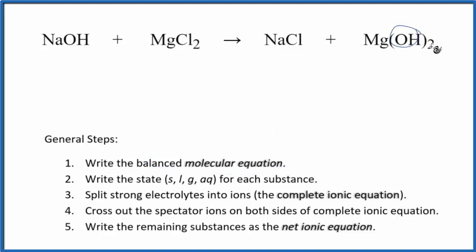I have two hydroxide groups here and just one here. So I'll put a two in front of the NaOH. Two sodiums, two chlorines. So I'm going to put a two here, two sodiums, two chlorines, magnesium, magnesium. This equation is balanced. Now we can write the state for each substance.